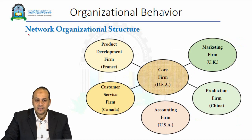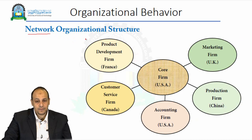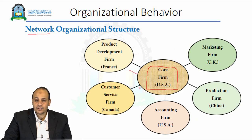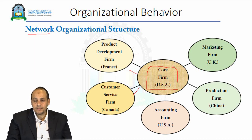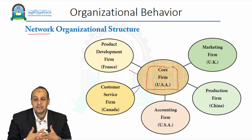We have another structure referred to as network organization structure. This is for global and transnational businesses around the world. The core firm or headquarter, in this example, is located in the United States. There are branches, subsidiaries, or affiliates in different countries — for example, product development in France, customer services in Canada, accounting in the USA, production in China, and marketing in the United Kingdom. This structure fits global businesses that are gigantic establishments, linking all affiliates into one structure based on specialty and territory.